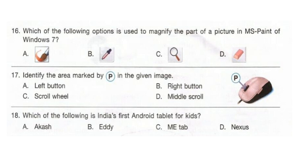Question 16: Which of the following options is used to magnify part of a picture in MS Paint of Windows 7? The correct answer is option C. Question 17: Identify the area marked by P in the given image. The correct answer is option C, scroll wheel. Question 18: Which of the following is India's first Android tablet for kids? The correct answer is option B, Eddie.